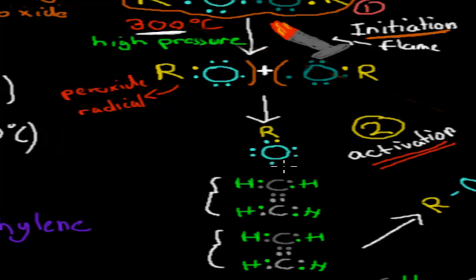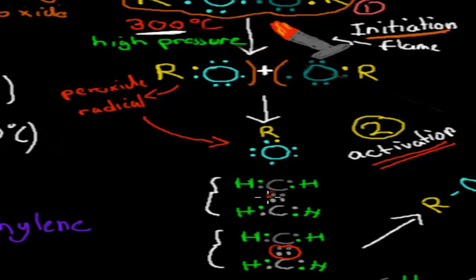Now what you can imagine is the second stage — the activation stage. Because the radicals are unhappy, they're going to look for more electrons to get back to eight. This peroxide radical is attracted to the ethylene molecule, which has a double bond that is really high in electron density. The oxygen compound grabs an electron from one of the carbons and binds to it so it has eight again.